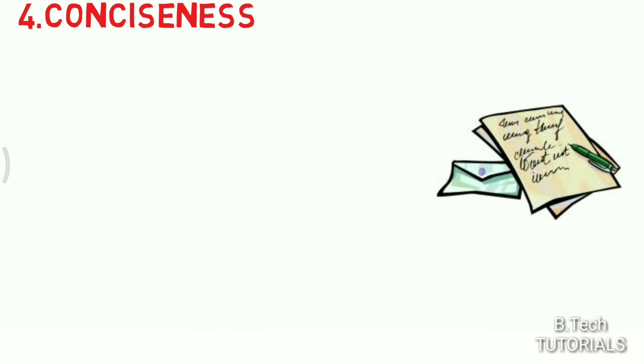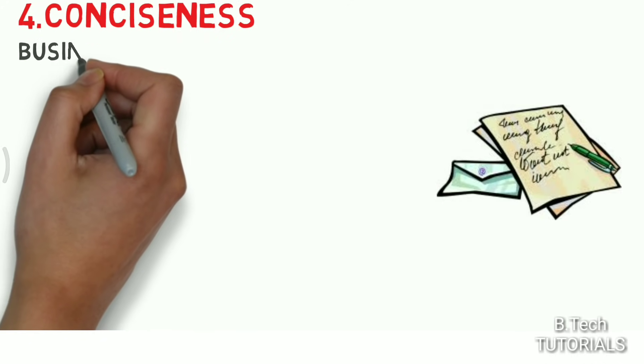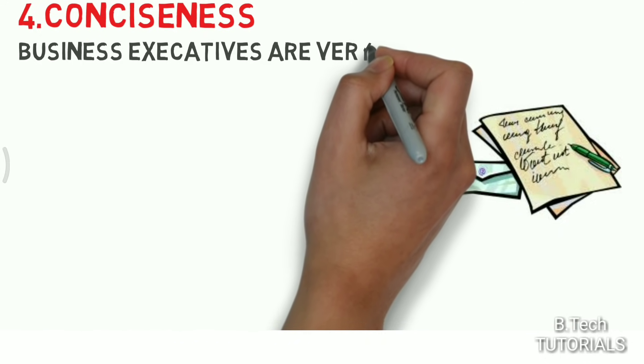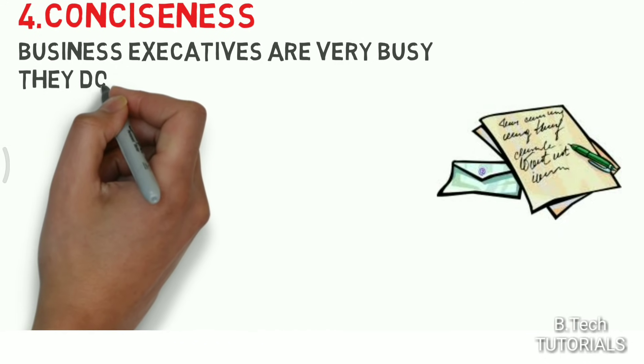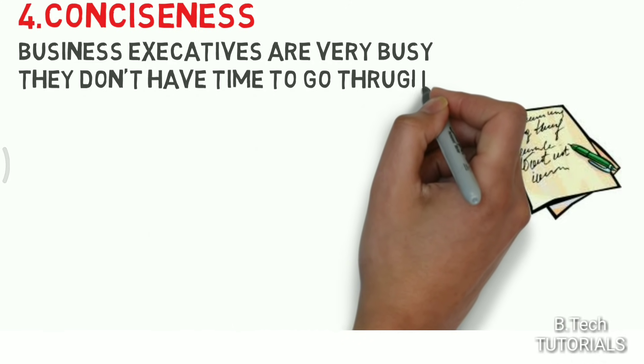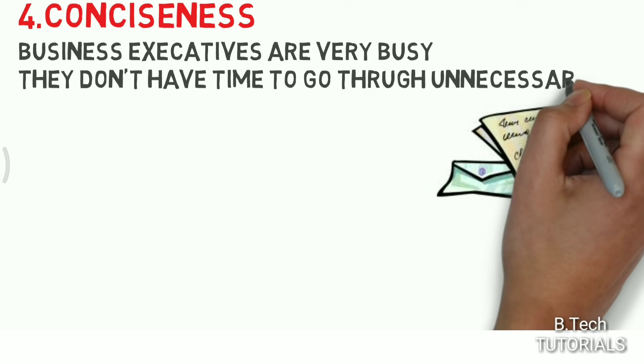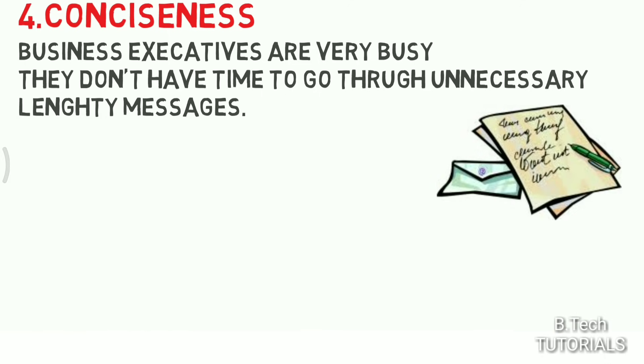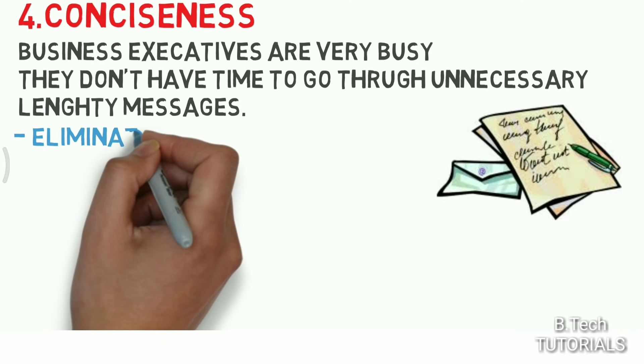The fourth C is conciseness. It means our message should be brief and understood by everyone. Business executives are very busy; they don't have time to go through unnecessarily lengthy messages. For that purpose, our message should be concise and understood by everyone.